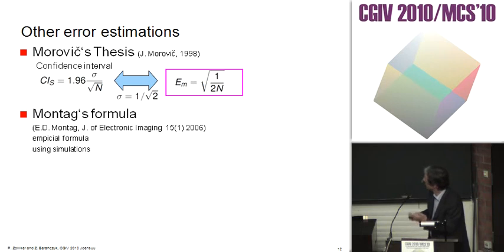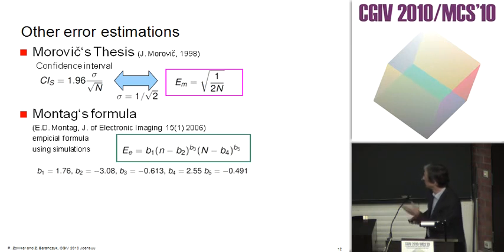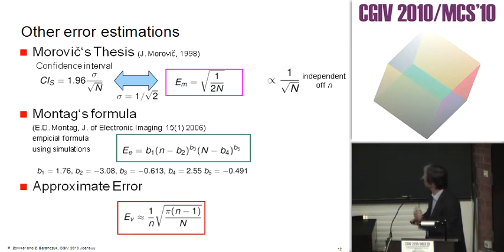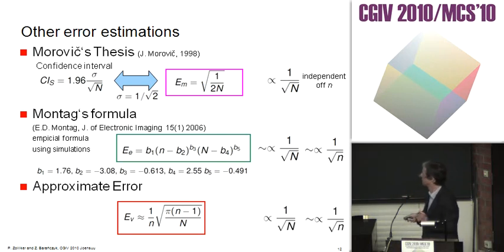About 80 years later, Mosteller saw this problem and he made simulations. He found an empirical formula where he fitted five values. Now we compare it with our approximate error. The first error estimation is only dependent on the number of observations and independent of the number of stimuli. Mosteller's formula is more or less proportional to 1 over square root of capital N and also more or less to 1 over the square root of the number of stimuli. The same result we get for our approximate error.